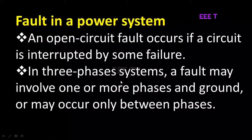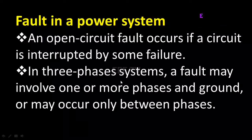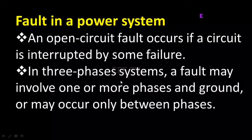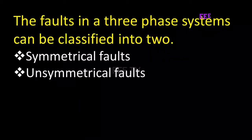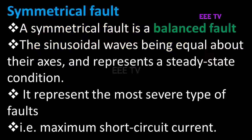Now there are two conductors. The fault in a power system is going to be divided into two paths: one is a symmetrical fault and one is an unsymmetrical fault. A symmetrical fault is a balanced fault.